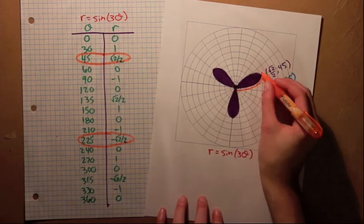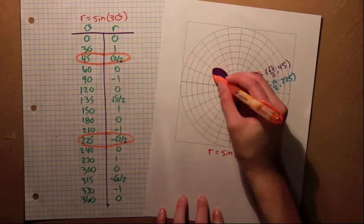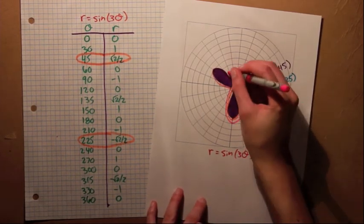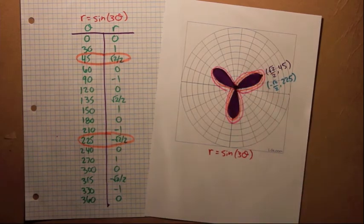It turns out that if we trace the graph from theta equals 0 to theta equals 360, the petals overlap as well. So we're actually drawing 6 petals, we just can't see the second 3.